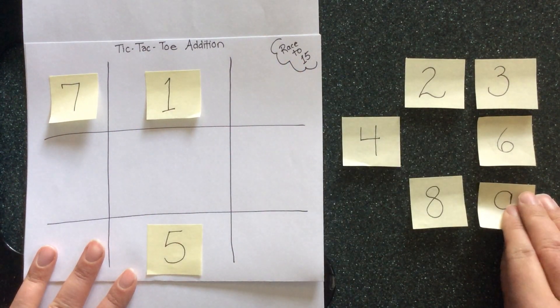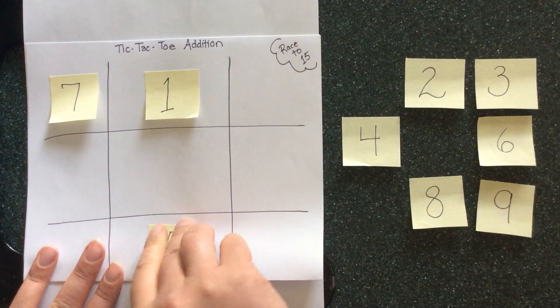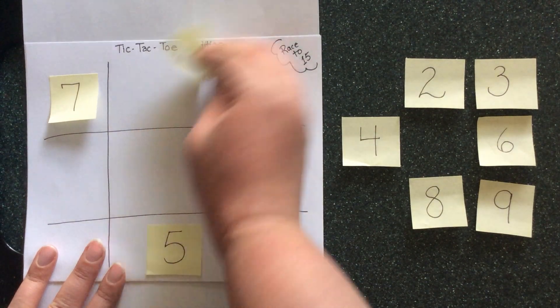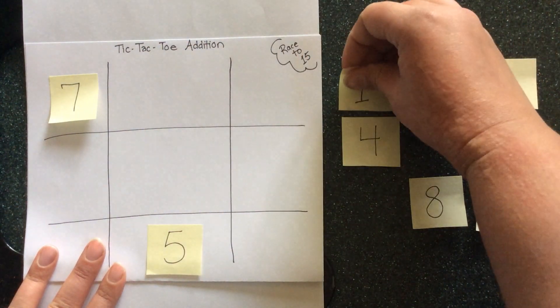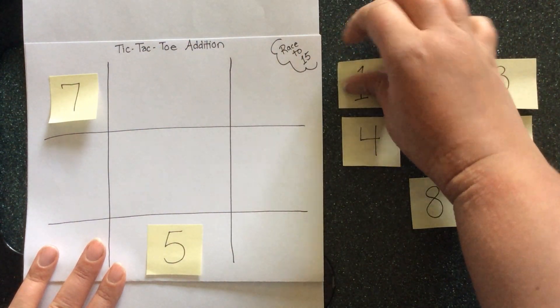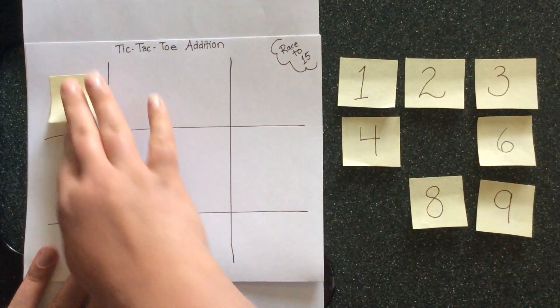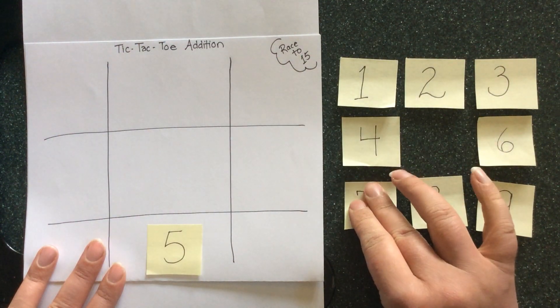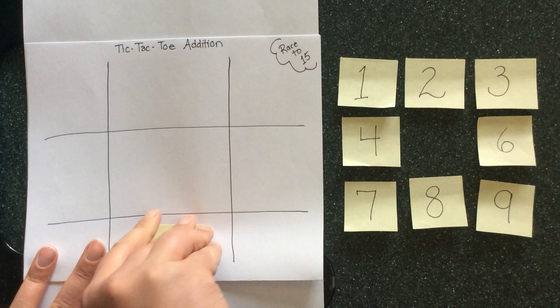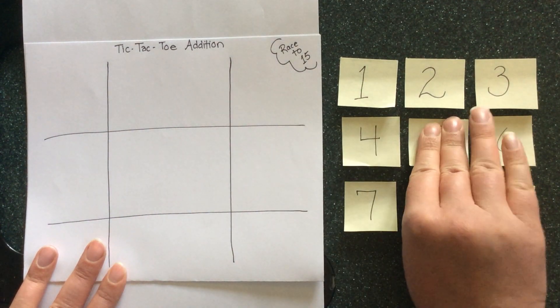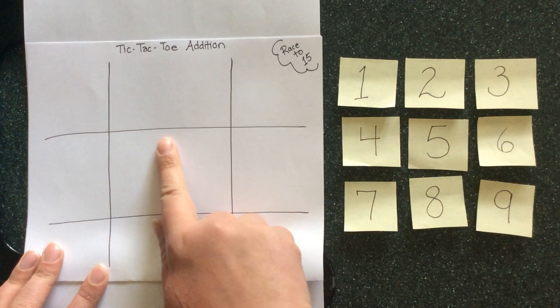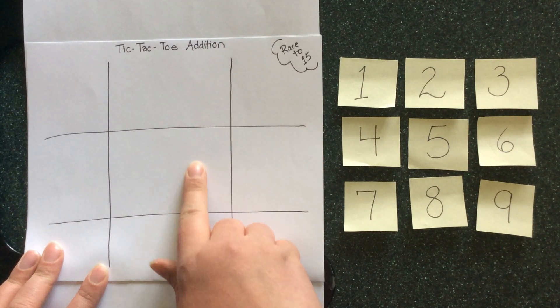Now there is a number where if you put it in the center square you will always win if you play it first. I'm not gonna tell you what number that is, but if you manage to figure it out you can have fun with it a few times and then make the decision that whoever starts is not allowed to place that number in the middle.